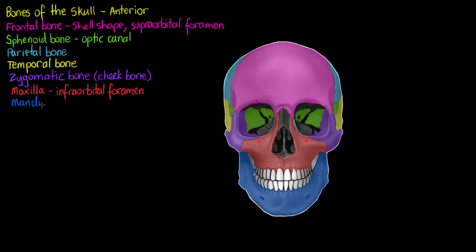Now below our maxilla we have our mandible—so our jawbone is our mandible—and it's going to have the mental foramen. Now mental named after that region which is called the mental region or chin region.